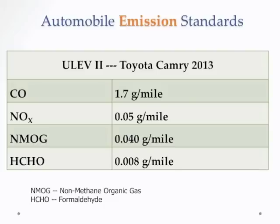These are the maximum emissions allowed per mile — there are standards for carbon monoxide, nitrogen oxide compounds, non-methane organic gases, and formaldehyde. These are quite low; in fact, this is the ultra-low emission standard. In the future, the standards will get even lower, so there has been a lot of progress, but we still need to reduce these levels as much as we can.